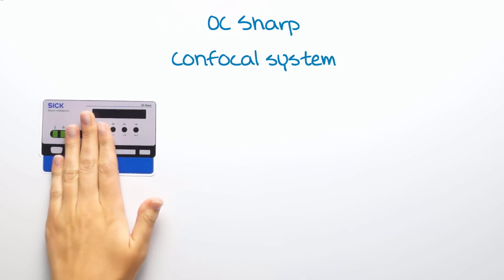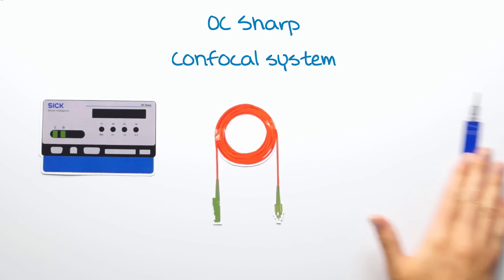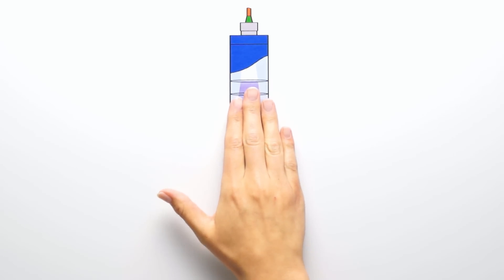The confocal system uses a white LED light which is directed from the controller to the measurement head through an optical fiber cable. Due to the arrangement of the lenses, a wavelength-dependent refraction emerges.